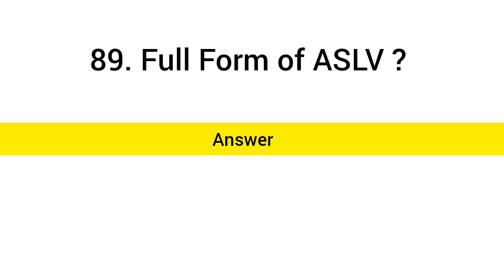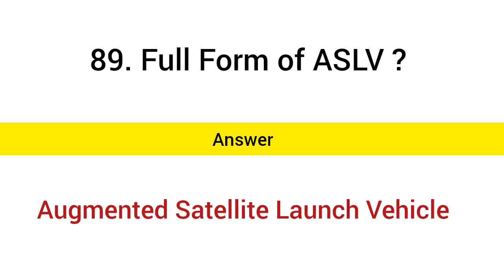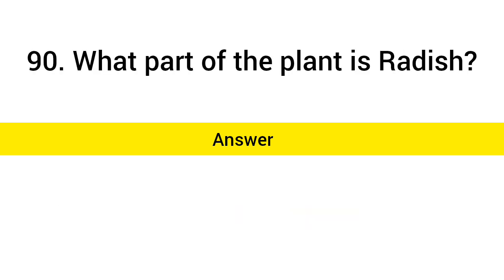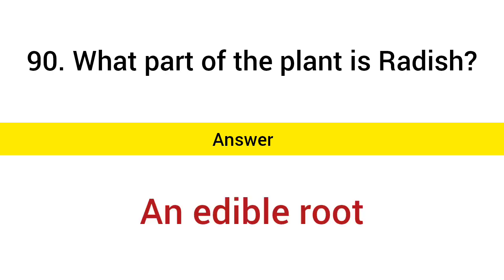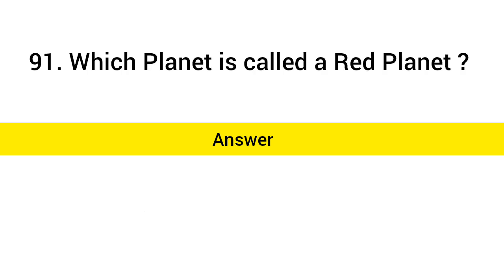Full form of ASLV? Answer: Augmented Satellite Launch Vehicle. What part of the plant is radish? Answer: An edible root. Which planet is called the red planet? Answer: Mars.